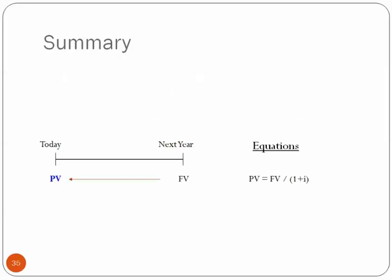Oftentimes, we actually are given some future amount. We're told in a year, you'll be receiving some amount. And we want to know, well, what is that worth today? And it's the same equation from the future value. It's just rearranged. Instead of multiplying, we divide the future value by 1 plus the interest rate.